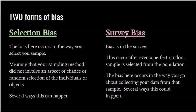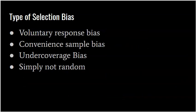Survey bias is when there's bias in the survey itself. This occurs even after a perfect random sample is selected from the population. The bias here occurs in the way you go about collecting your data from that sample. So in survey bias, maybe how you selected your sample is fine, but how you collect the data for your survey is not fine.